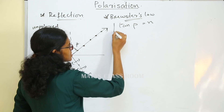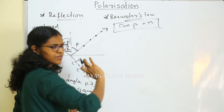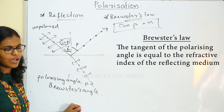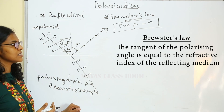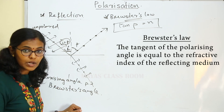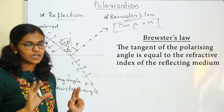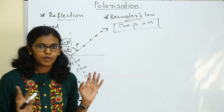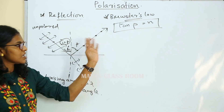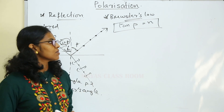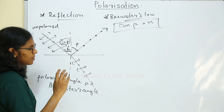The Brewster's Angle is defined as: the tangent of the polarizing angle is equal to the refractive index of the medium. That is Brewster's Law: tan(p) = n.